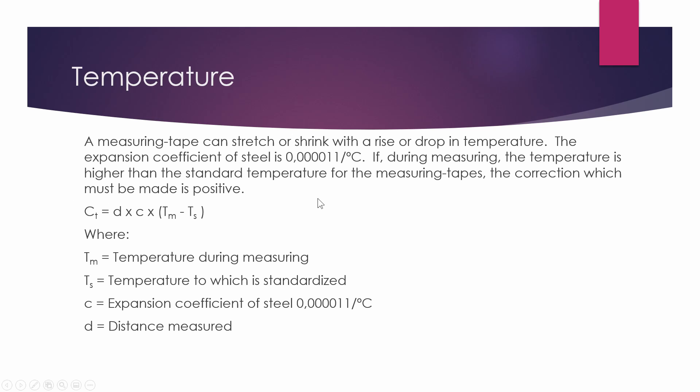So the first correction we'll work through is the correction of temperature. We have four variables in this. First would be our distance, so this is the distance you actually measured. Then we have the expansion of steel. We have our measured temperature and we have our standard temperature.